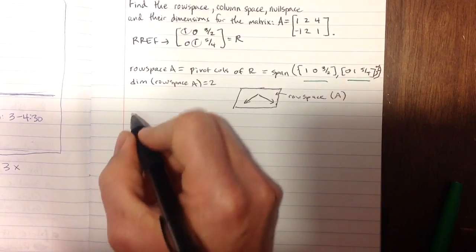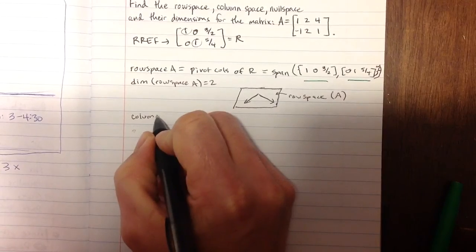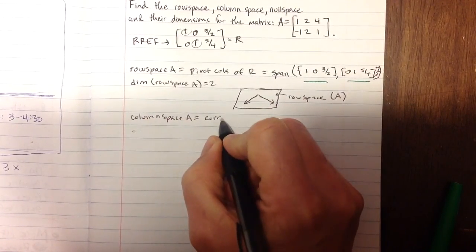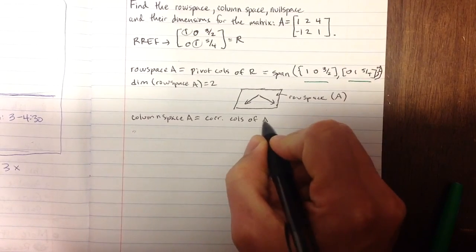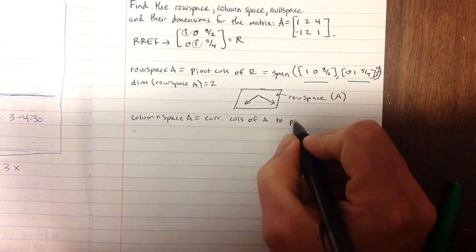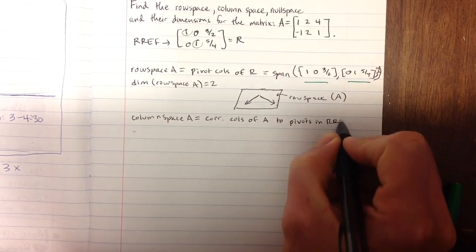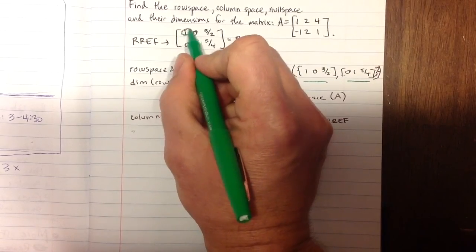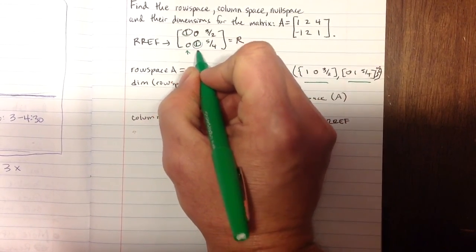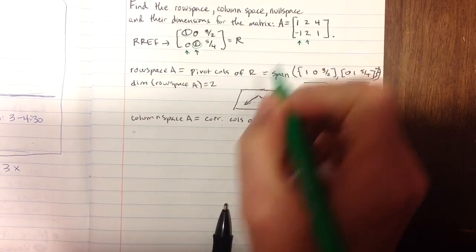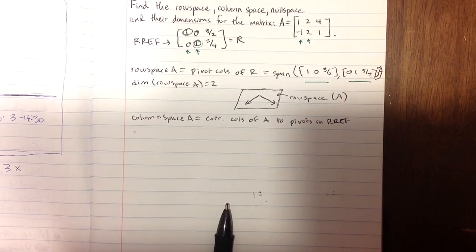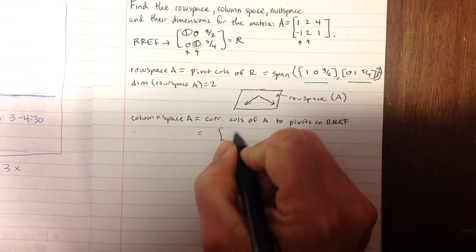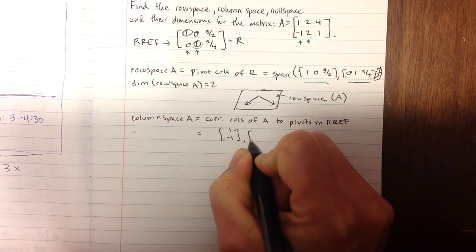Let's go on to the column space. The column space of A is the corresponding columns of A to pivots in RREF. If we look at the reduced row echelon form, we have two pivots. These correspond to the first two columns of our matrix. So I'm going to take the first two columns of my matrix A. The column space is made up of the vectors 1, negative 1, and 2, 2.